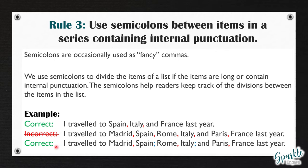So the correct version is: 'I traveled to Madrid, Spain; Rome, Italy; and Paris, France last year.' The semicolon after 'Spain' groups Madrid and Spain together as one place, and the semicolon after 'Italy' groups Rome and Italy together. This makes it easy for the reader to understand these are three places: Madrid, Spain; Rome, Italy; and Paris, France. We only put semicolons after the first two items because this is a list of three — before the final conjunction.